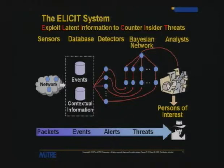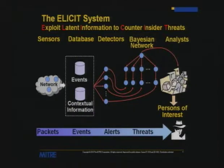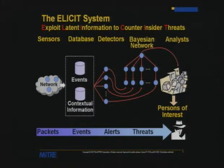To test these concepts we built a system called ILLICIT — it stands for Exploit Latent Information to Counter Insider Threats. The system processes data from packets to events to alerts to threats. We built a network sensor looking at how people use information, and also collected context about people and the information they interact with. By combining those two forms of data we built a number of detectors that calculate a score each day for every user with activity and produce alerts.